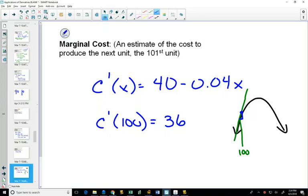And according to this, this would go up 36. And it's an estimate because it's not perfectly on that parabola. If we want to see how much does it actually cost to produce the 101st one, how would you find that?